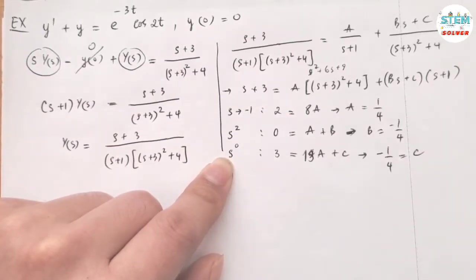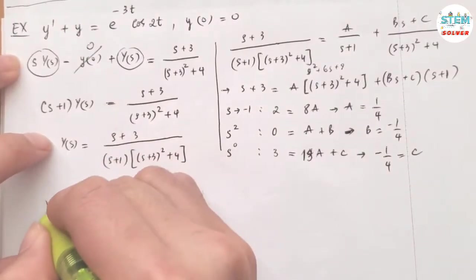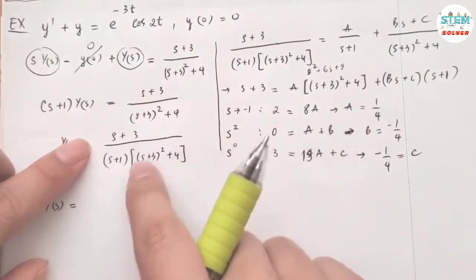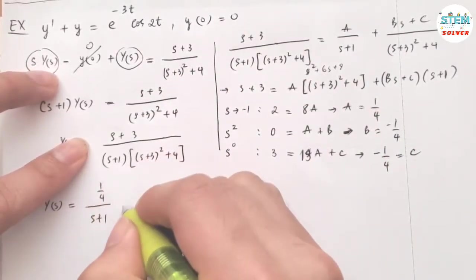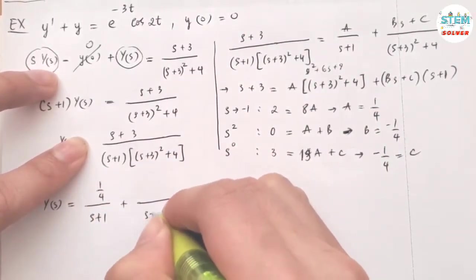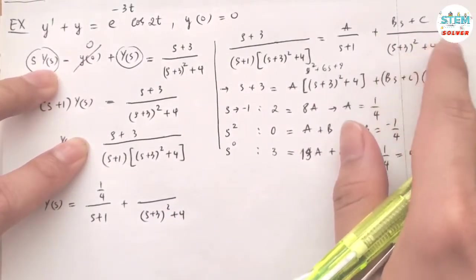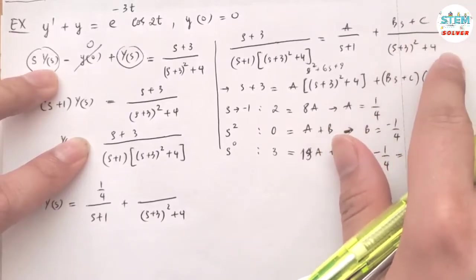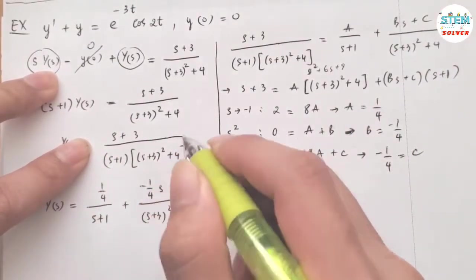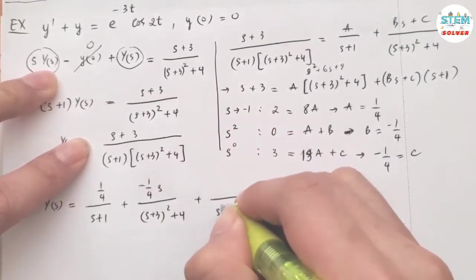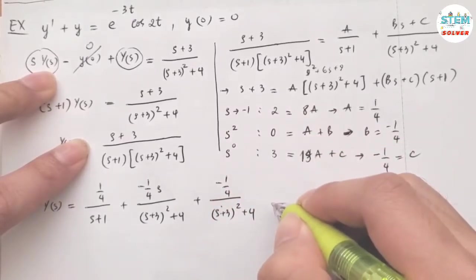Plugging the constants back in: Y of s equals 1 fourth over s plus 1, plus Bs plus C over s plus 3 squared plus 4. We split the second fraction into two: negative 1 fourth times s over s plus 3 squared plus 4, plus negative 1 fourth over s plus 3 squared plus 4.